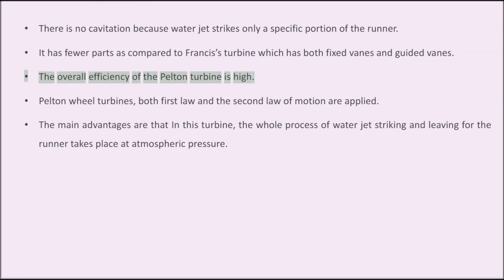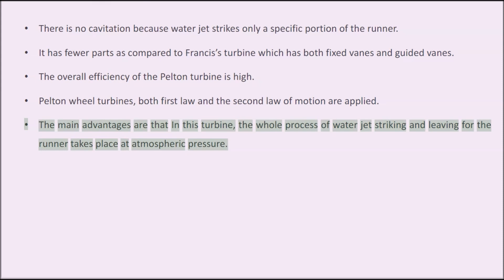In the Pelton wheel turbine, both the first and second laws of motion are applied. The main advantage is that the whole process of the water jet striking and leaving the runner takes place at atmospheric pressure.